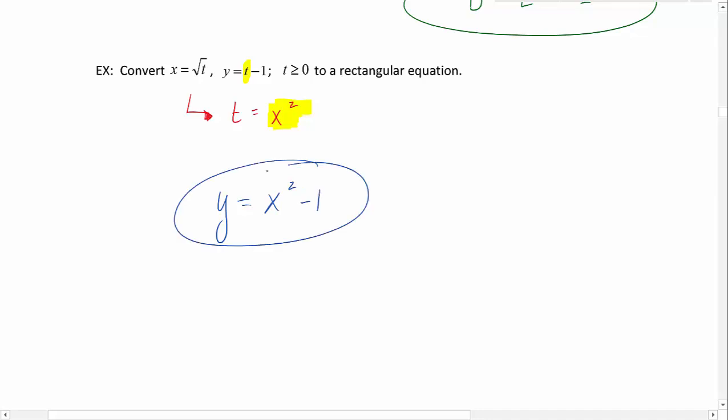Let's talk about the domain of this one. We're given that t has to be greater than or equal to 0. Well, in rectangular, our x values are our domain. So if x is equal to the square root of t, and t has to be greater than or equal to 0,